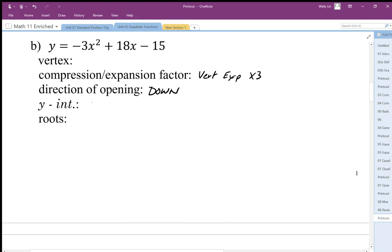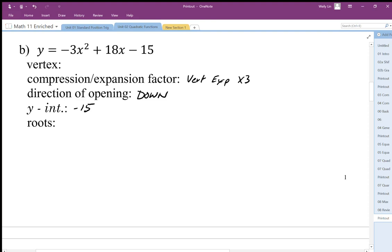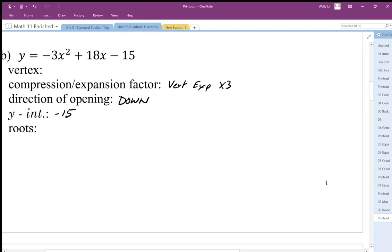So y-intercept here is negative 15. And the vertex we're going to have to find. We can find the vertex by completing the square. We can find the x-coordinate using vertex formula, but we'll just complete the square to get it. So y equals negative 3, factor out the negative 3 out of the first two terms. We're going to leave that last term separate.